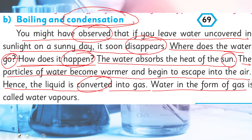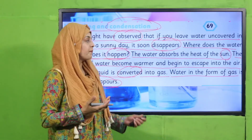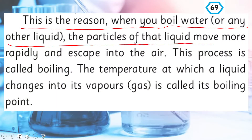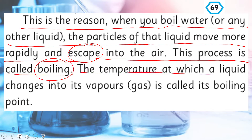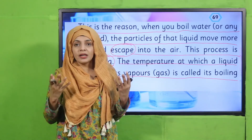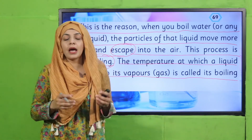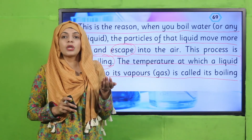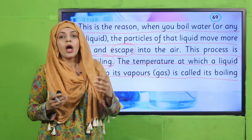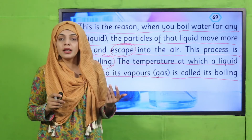Water in the form of gas is called water vapors — yani ke paani jab gas ki shakal ikhtiyar kar leta hai, toh hum usko bukharat ya water vapors kehte hain. Now, when you boil water or any other liquid, the particles of that liquid move more rapidly and escape into the air — this process is called boiling. The temperature at which a liquid changes into its vapors is called its boiling point. The particles start to move very fast and escape into the air, and the point at which the liquid changes into gas is called its boiling point.